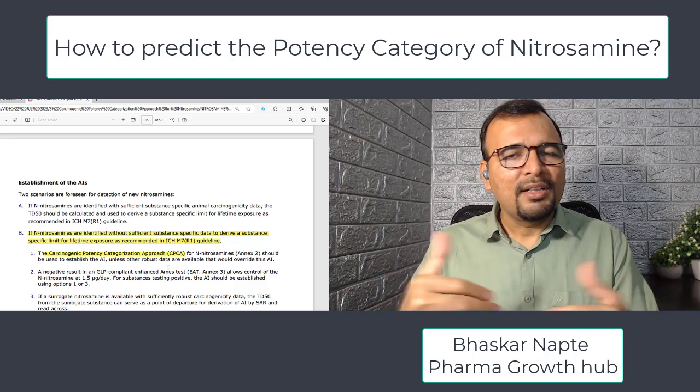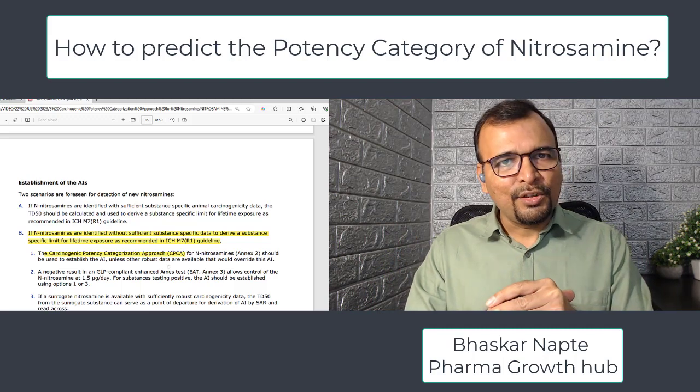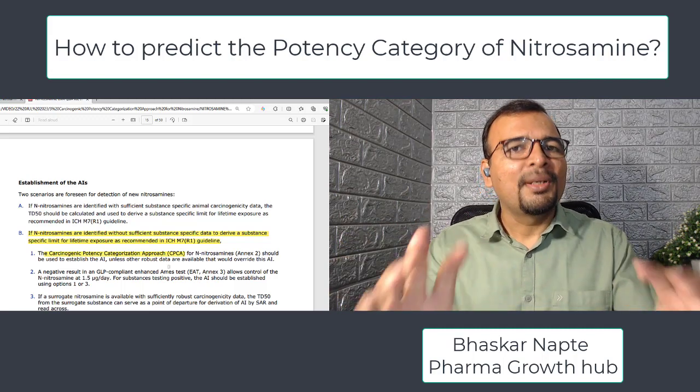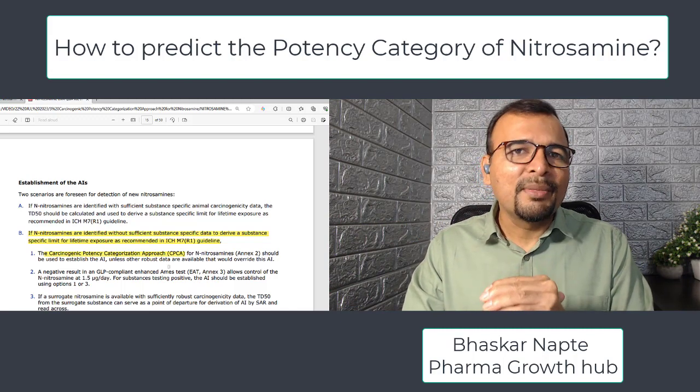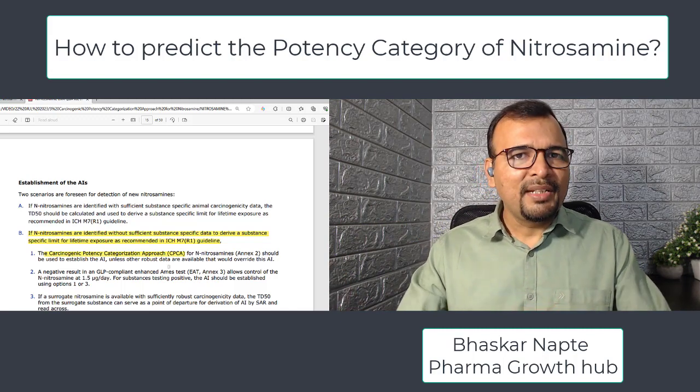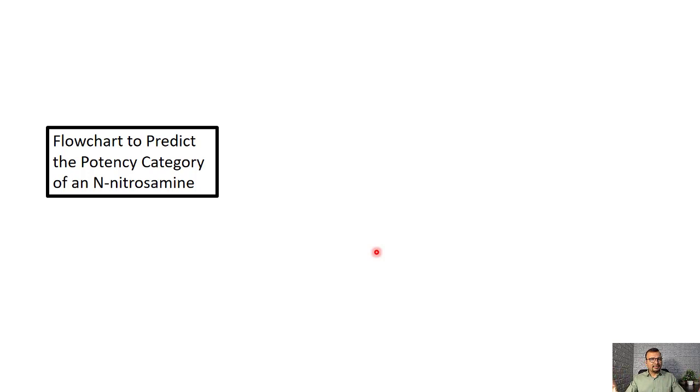We will also discuss some interesting examples of how these categories can be applied to actually set the acceptable intake for a nitrosamine. So let me bring the presentation on the board. This Q&A document published by EMA gives the different potency categories. Before going to the potency categories, we first need to understand which category a given nitrosamine compound falls into, and there is an important diagram visible on the screen now.